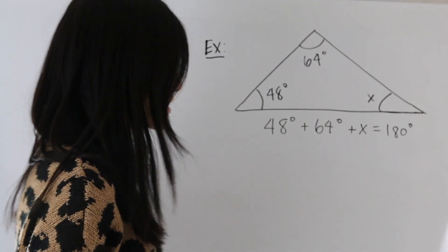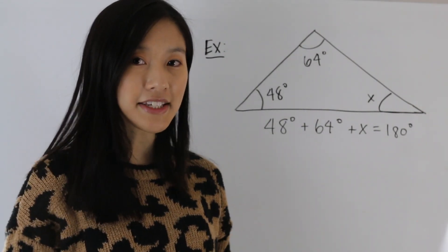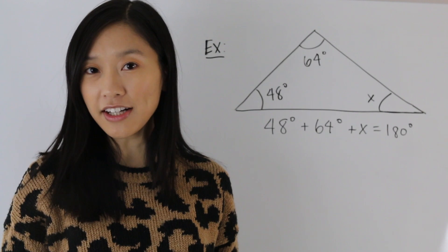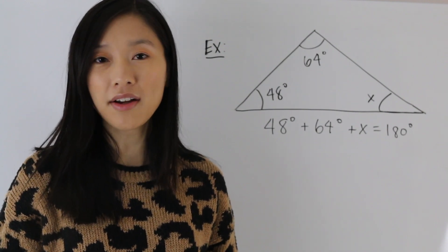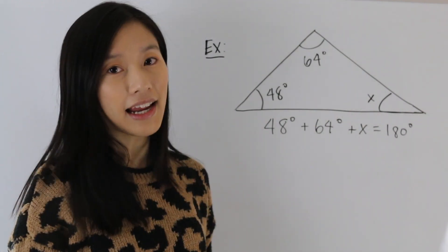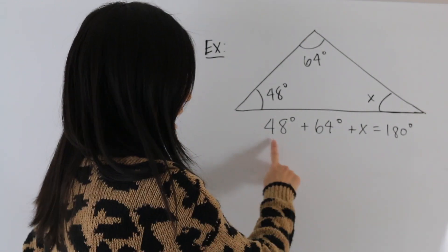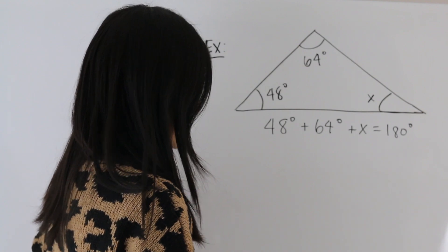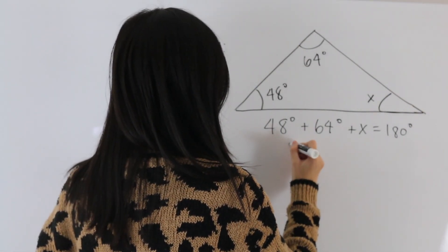So we get 48 degrees plus 64 degrees plus X is equal to 180 degrees. And from here, we're going to want to simplify this equation. And so we can do that by adding the 48 and the 64 as shown here. And so 48 plus 64 gives us 112 degrees.